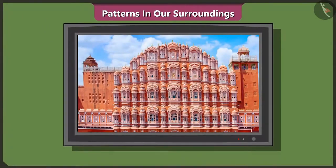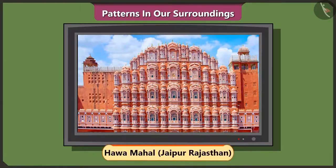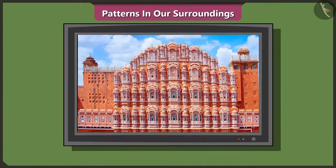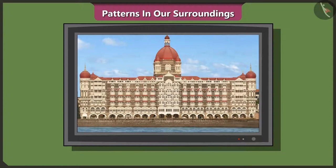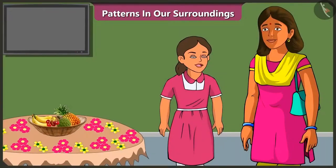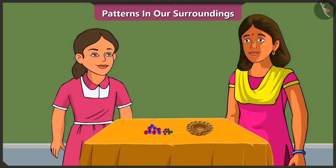Mummy, is there a pattern on this building as well? Yes — this building is the Hawa Mahal at Jaipur in Rajasthan, and this is the Taj Hotel in Mumbai. These patterns on the buildings make them look so beautiful. That reminds them of decorating the Diyas for school tomorrow — there are similar patterns on Diyas as well.